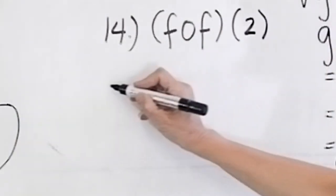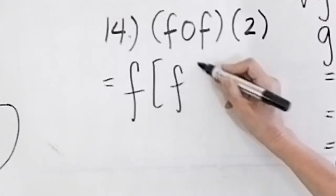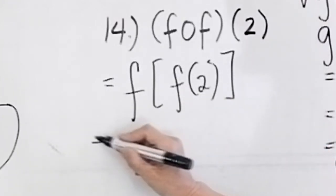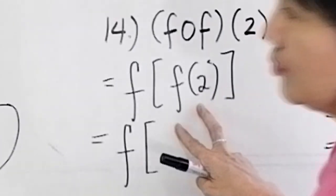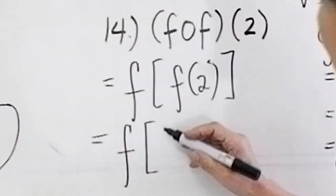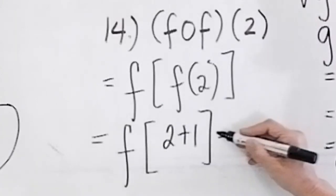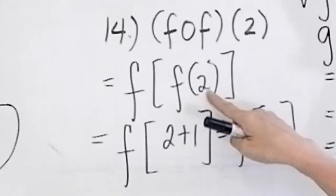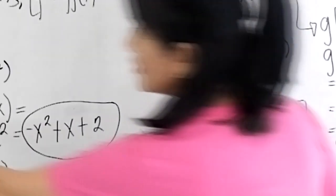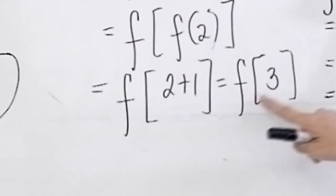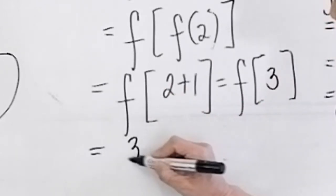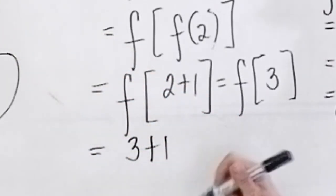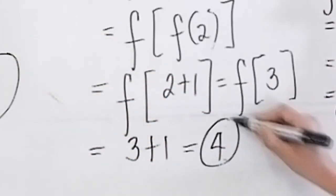Now, what about f(f(2))? First find f(2): substitute x = 2 into x + 1, giving 2 + 1 = 3. Then find f(3): substitute x = 3 into x + 1, giving 3 + 1 = 4. So the final answer is 4.